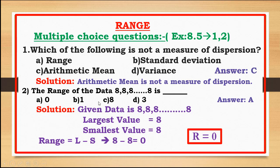We are familiar with range, standard deviation, arithmetic mean, and variance — there are 4 options. The answer is easy: arithmetic mean. The answer is C.